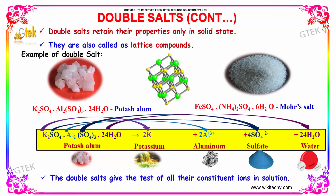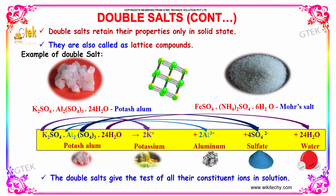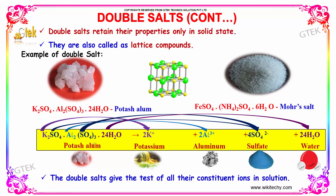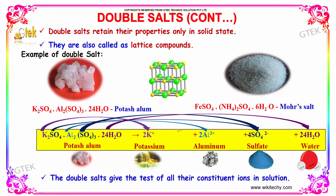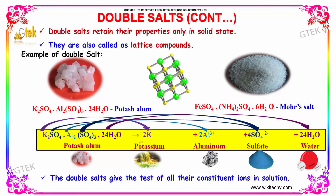Here is an example of a double salt — potassium alum: potassium sulfate and aluminum sulfate with water. This one is called Mohr's salt: ferrosulphate, ammonium sulfate, and water. So potassium alum will give potassium, aluminum, sulfate, and water in solution. The double salt gives the ions of all their constituents in solution.